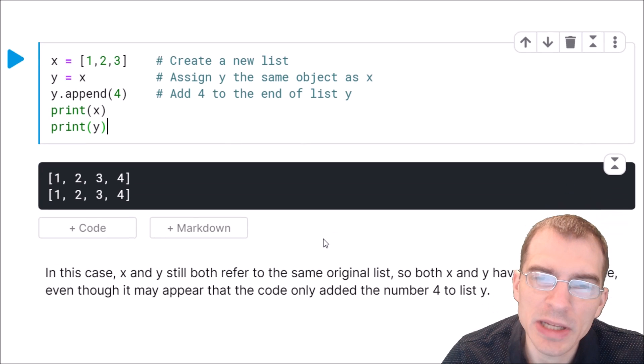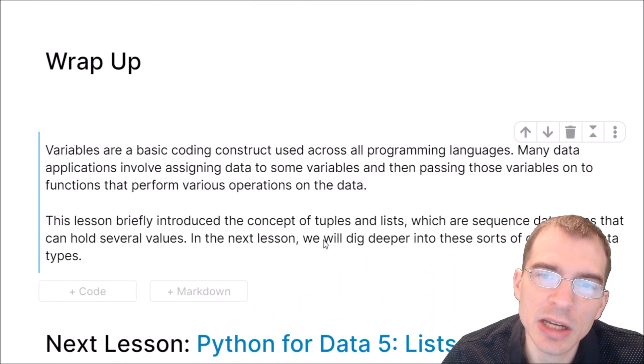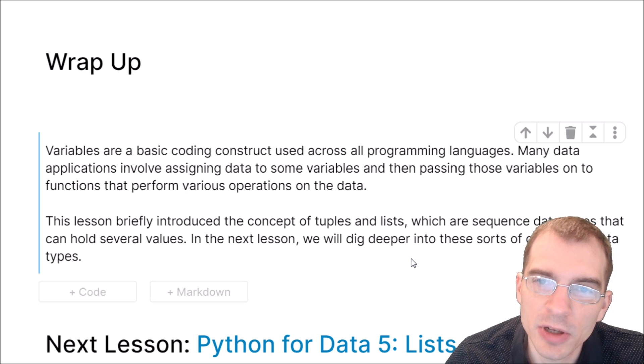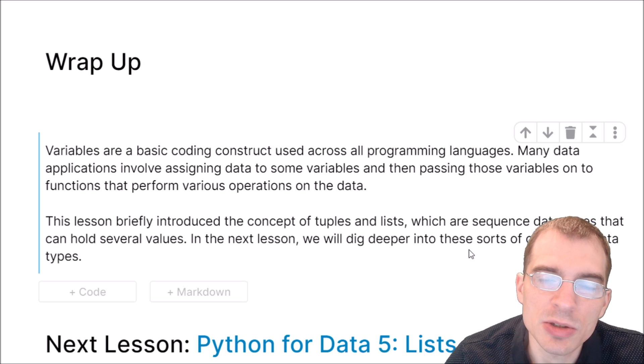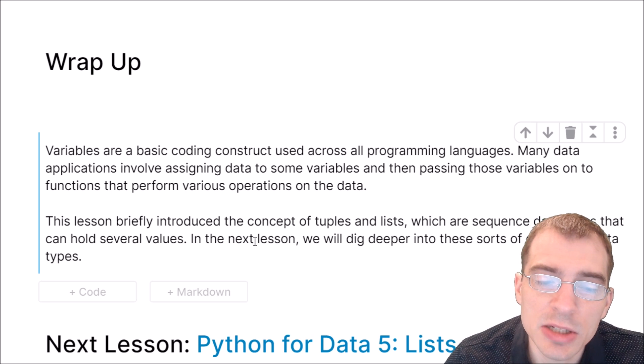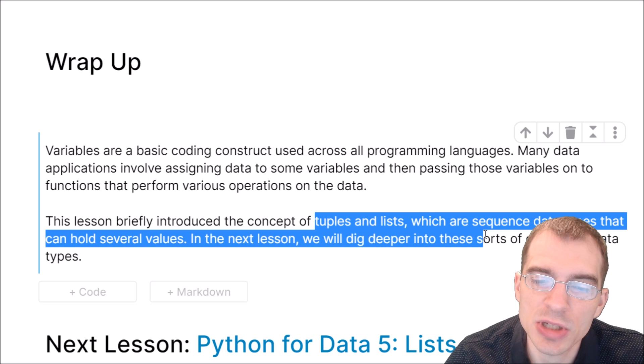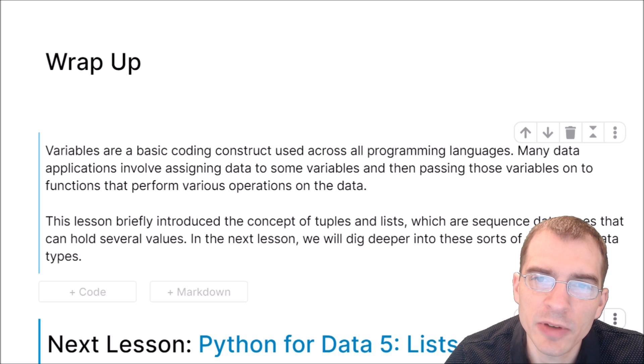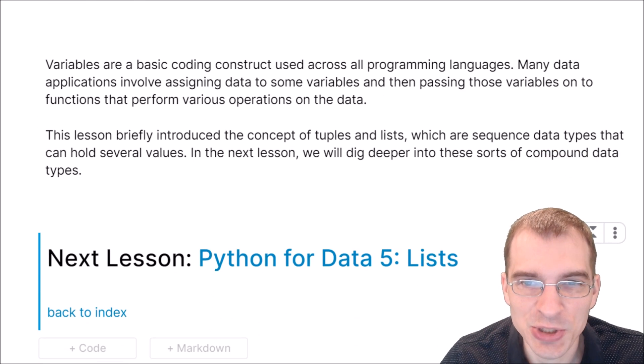Variables are basic coding constructs that are used across all programming languages. When you're dealing with data, you'll often have data objects assigned to variables and then run functions on those data objects as a part of data analysis. In this lesson, we briefly introduced the concept of tuples and lists, which are sequential data objects that can hold several values. In the next lesson, we're going to dig more into these sorts of compound data types by having a full lesson on Python lists. Thanks for watching, and I'll see you again next time.